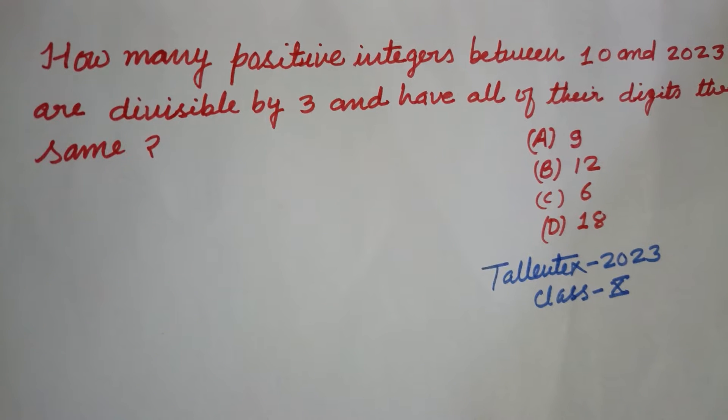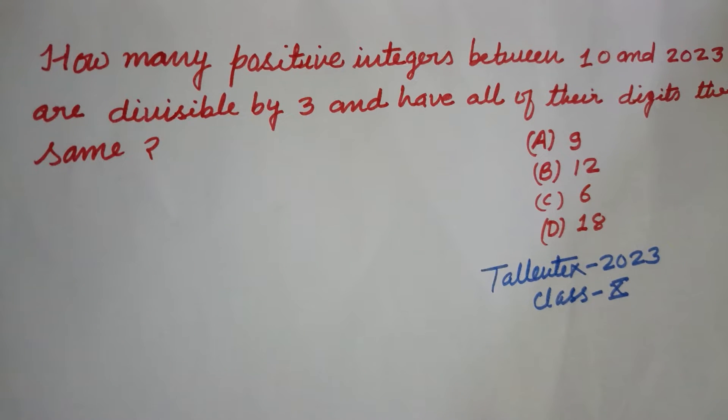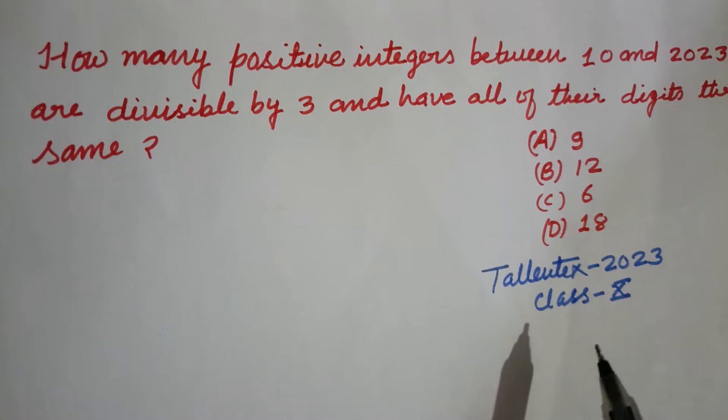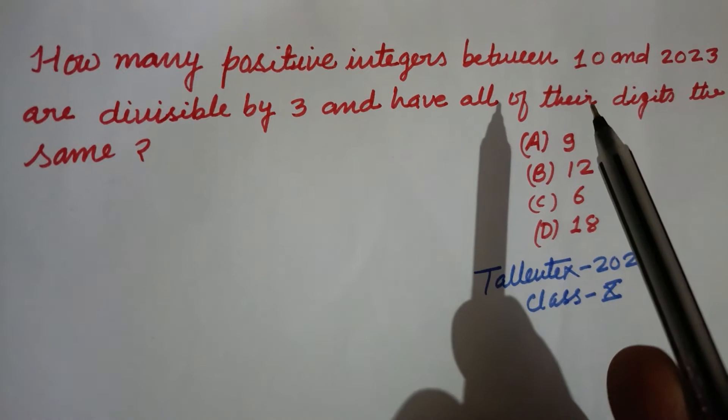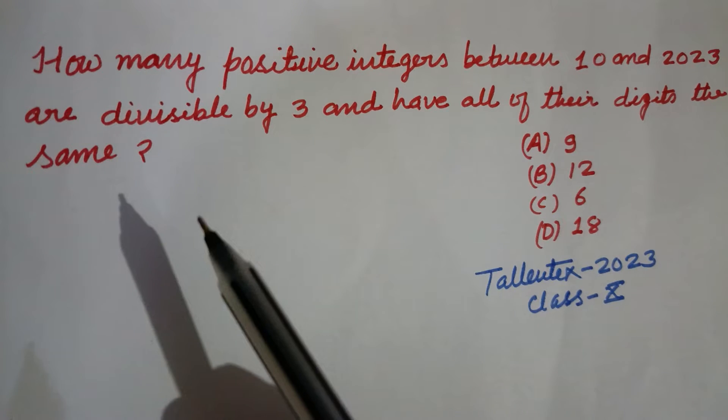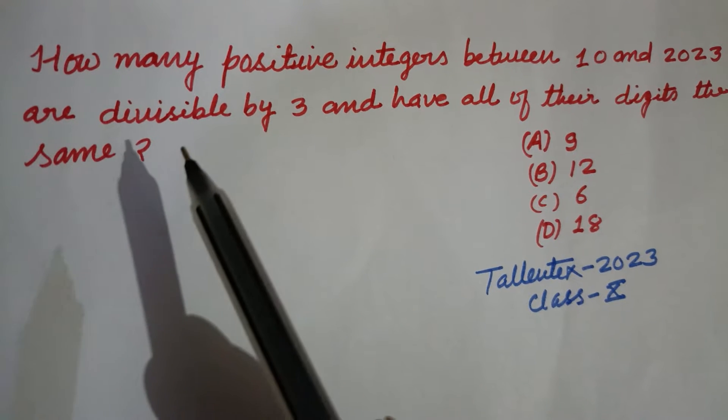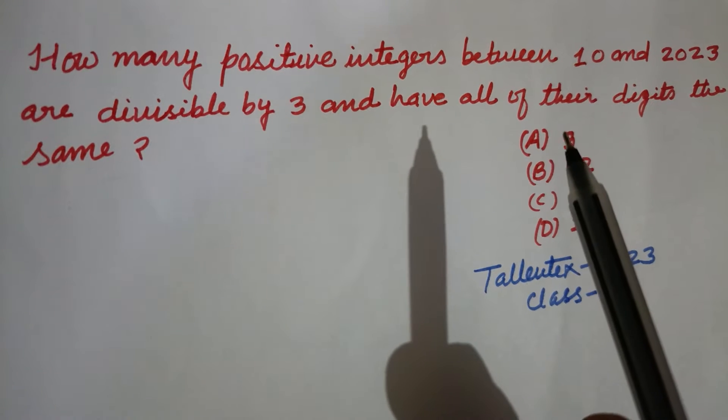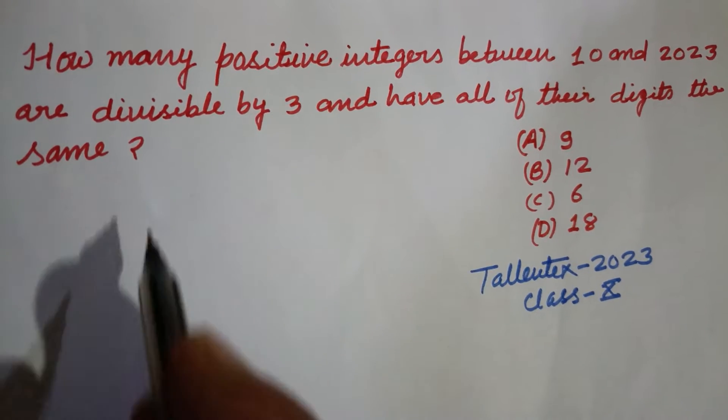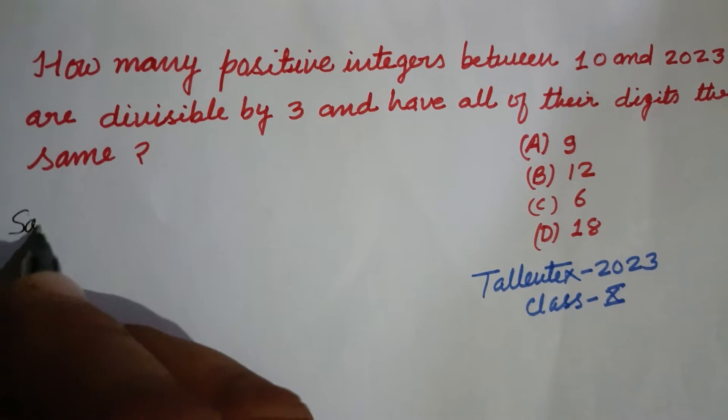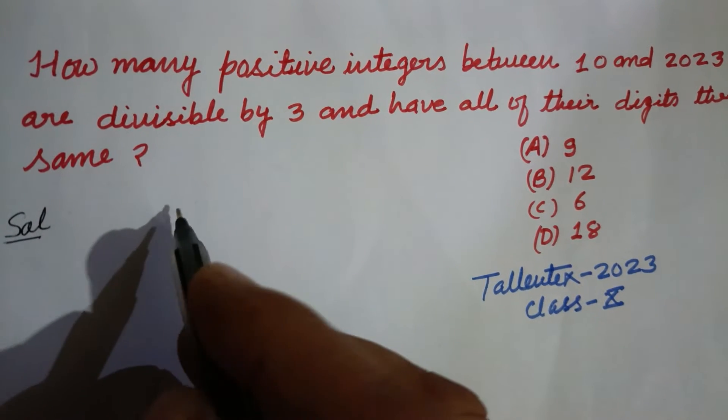Hello viewers, warm welcome to this YouTube channel. Question from Tellentutor 2023 Class 10: How many positive integers between 10 and 2023 are divisible by 3 and have all of their digits the same?